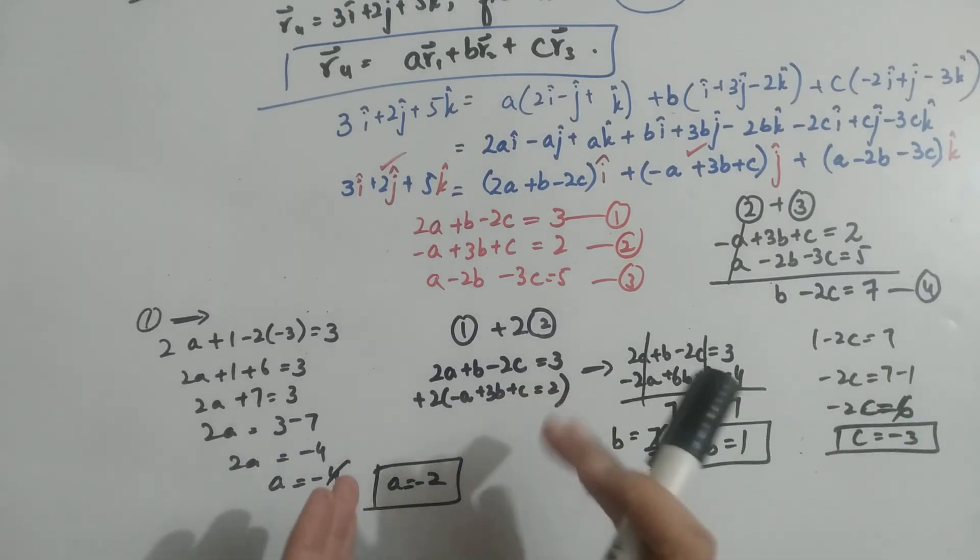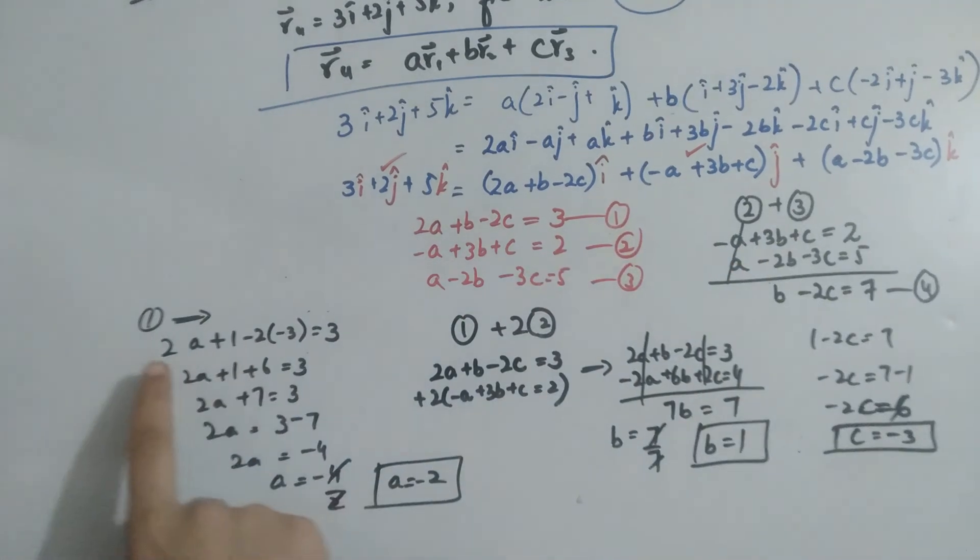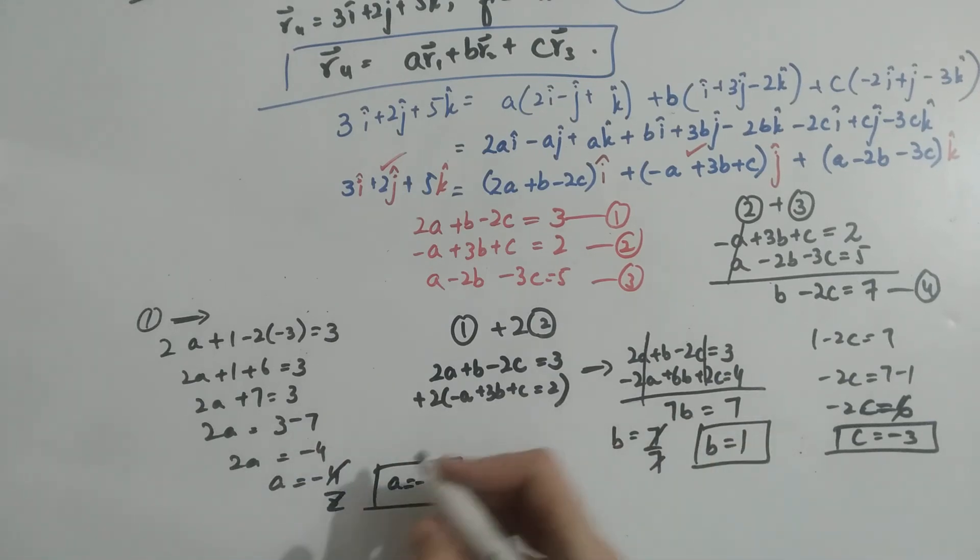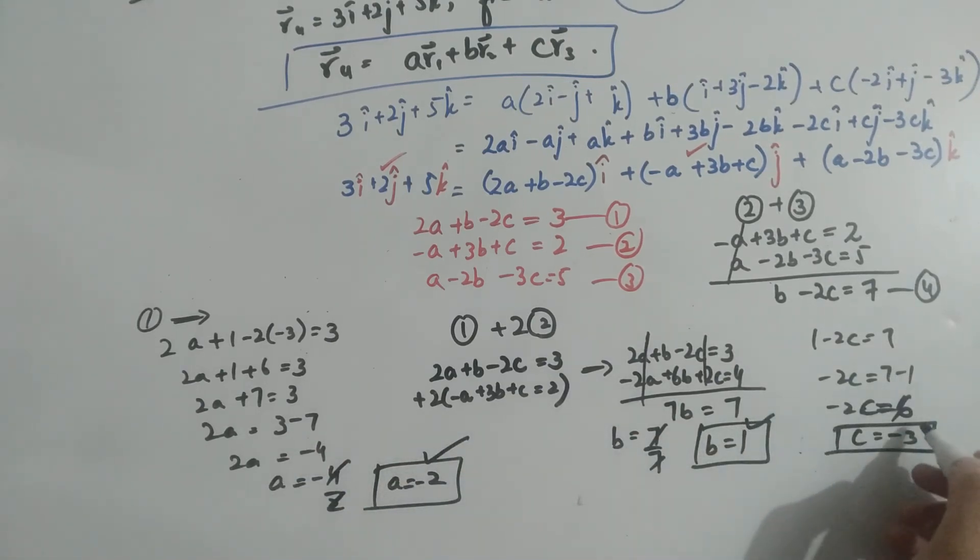Okay learners, I have simply put the values of B and C in equation number 1. I will solve this equation and I have obtained the value of A equals minus 2, B equals 1, and C equals minus 3. So this was the whole solution of Exercise 1.2.